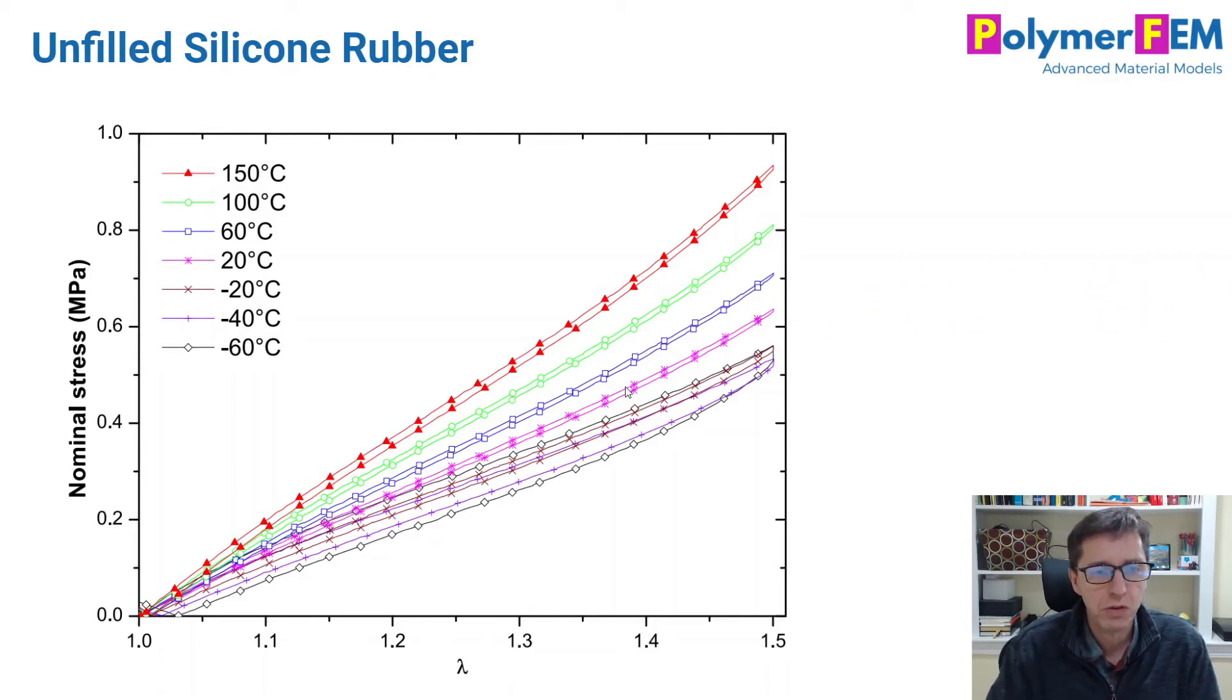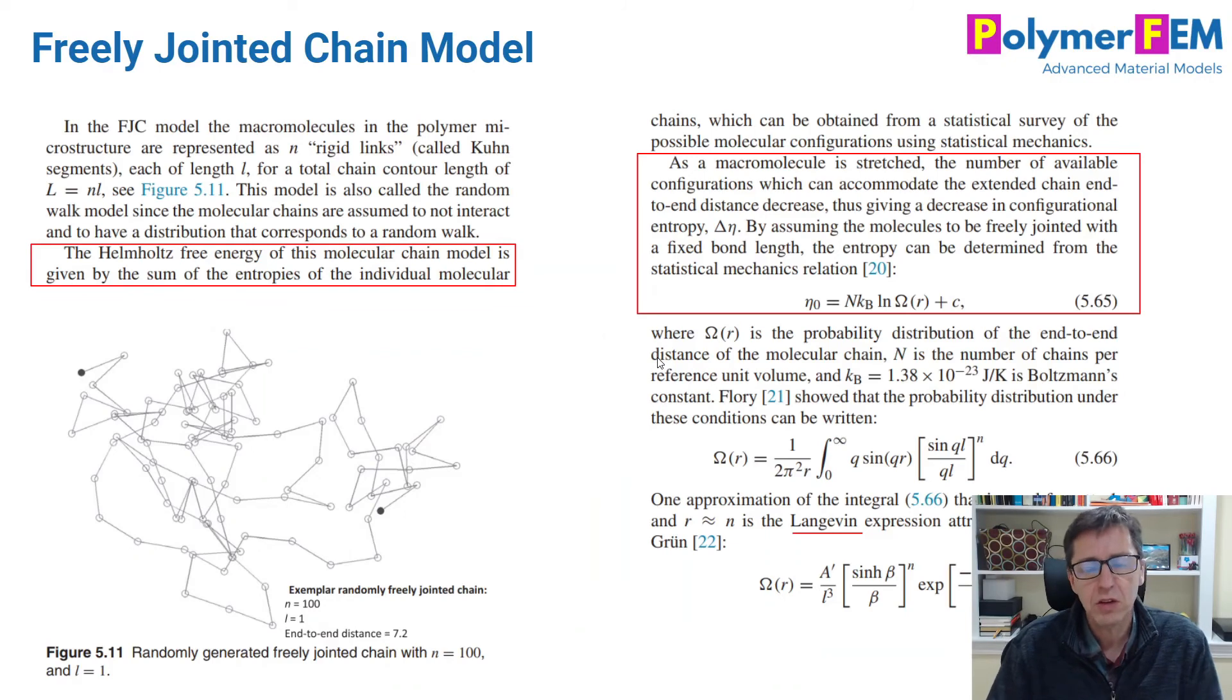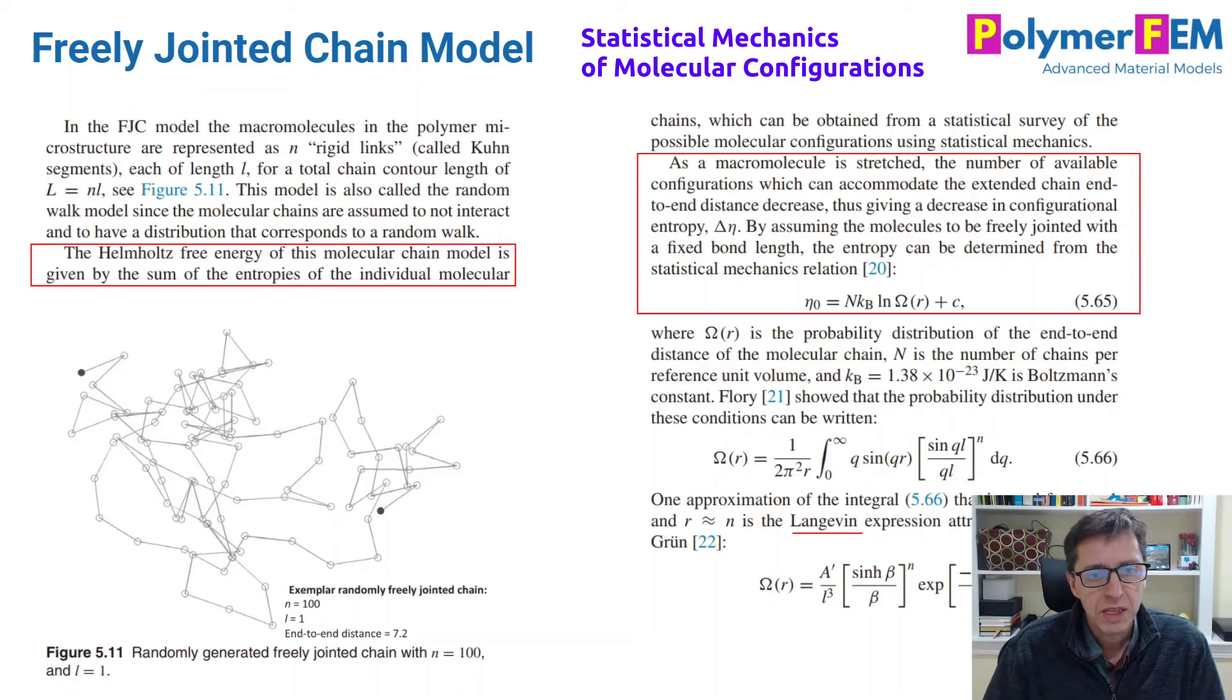So that's very common and this is what we see for certain materials, certain rubbers, in this case an unfilled silicone rubber. But the question now is why is this? Why is this material behaving so weird? And to answer that we need to dive into a little bit of chain mechanics, polymer chain mechanics.